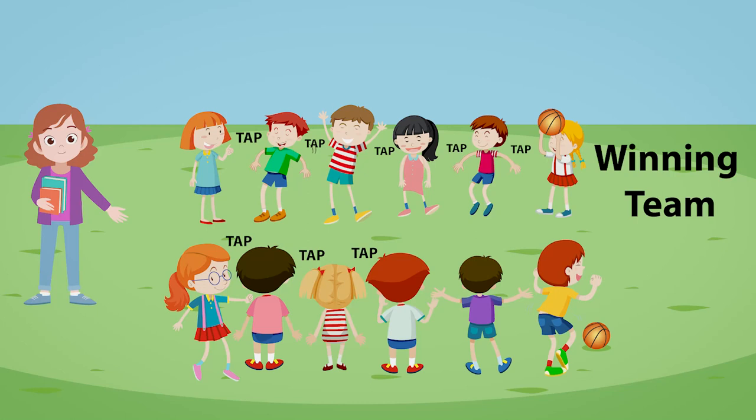I divided the class into two groups. Each group formed a line and stood facing each other. The teacher stands at one end and there's a ball kept at the other end. The teacher simultaneously taps the first child of each group. The child then passes the tap to the neighboring child's shoulder. The last person of the group has to pick up the ball once they receive the tap. The group which picks up the ball first is the winner — they are the better conductor of the taps.